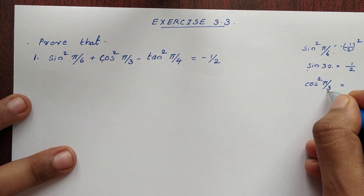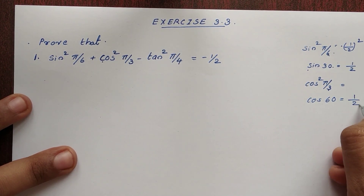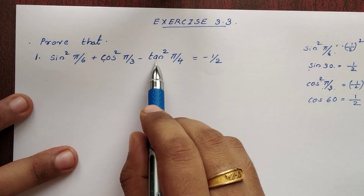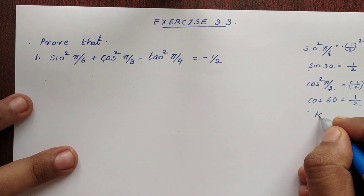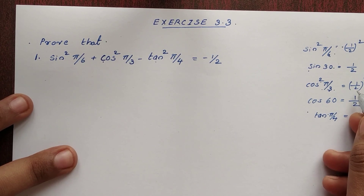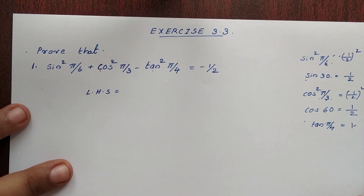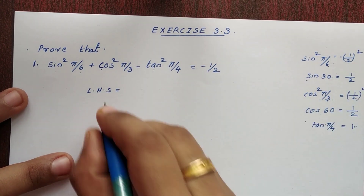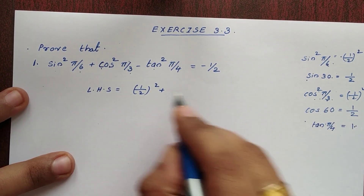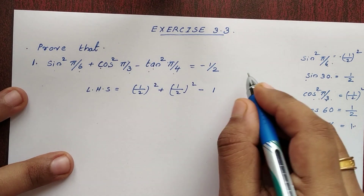cos²(π/3): π by 3 is equal to 60 degrees. cos 60 is equal to 1 by 2. So cos²(π/3) equals 1 by 2 squared, which is 1 by 4. Then minus tan²(π/4): tan 45 is 1, so tan²(π/4) equals 1.